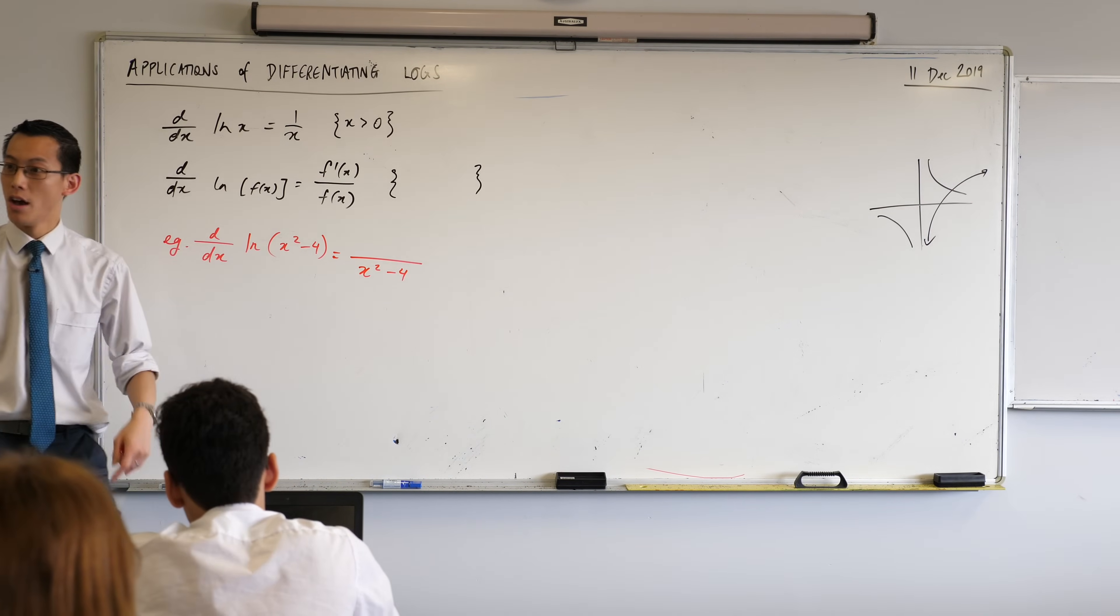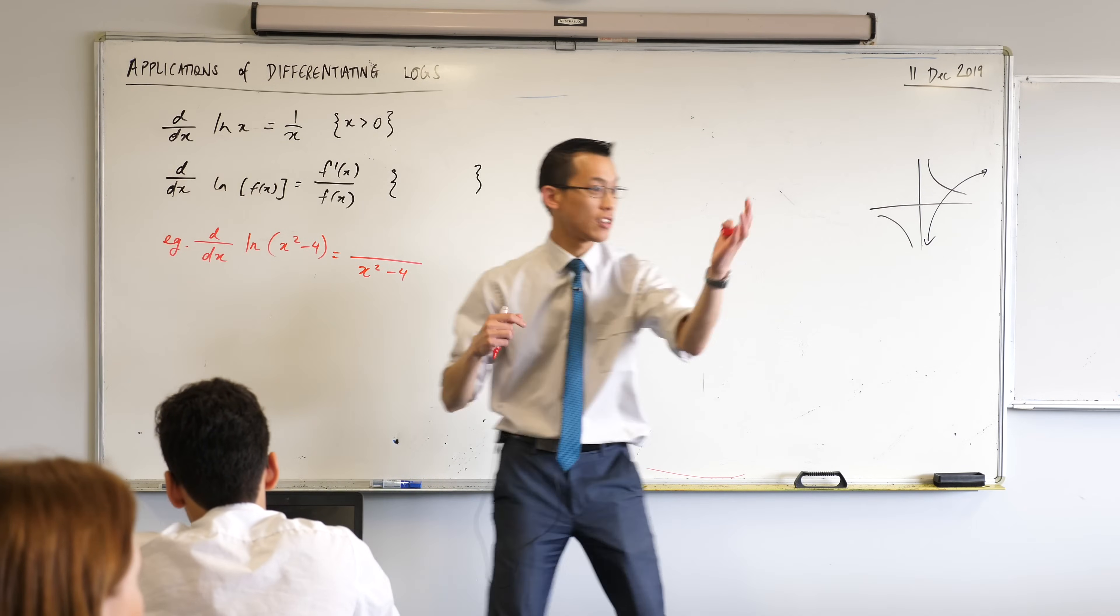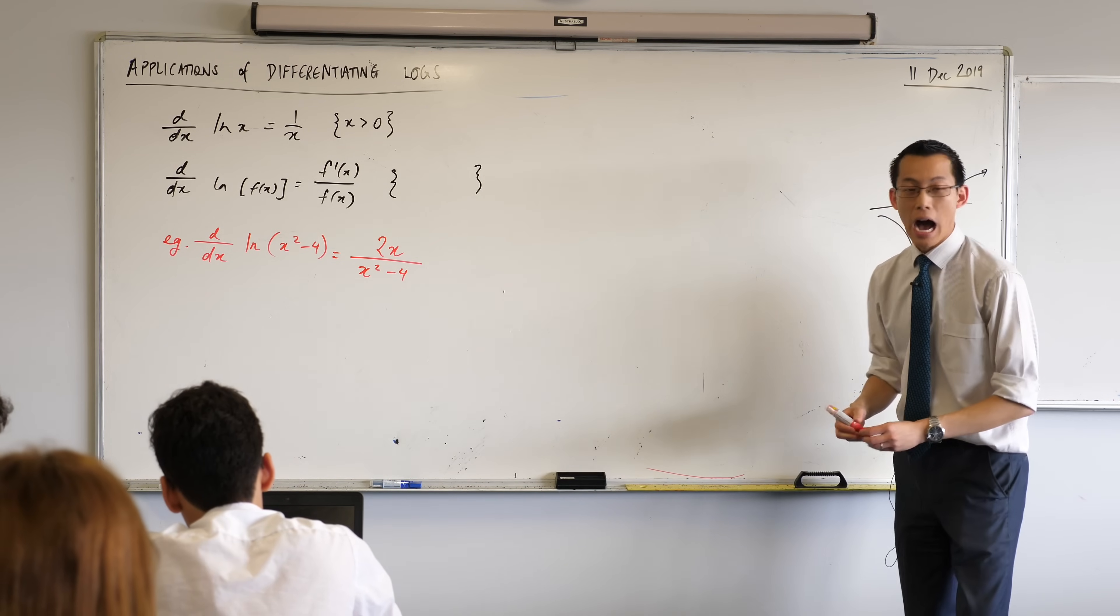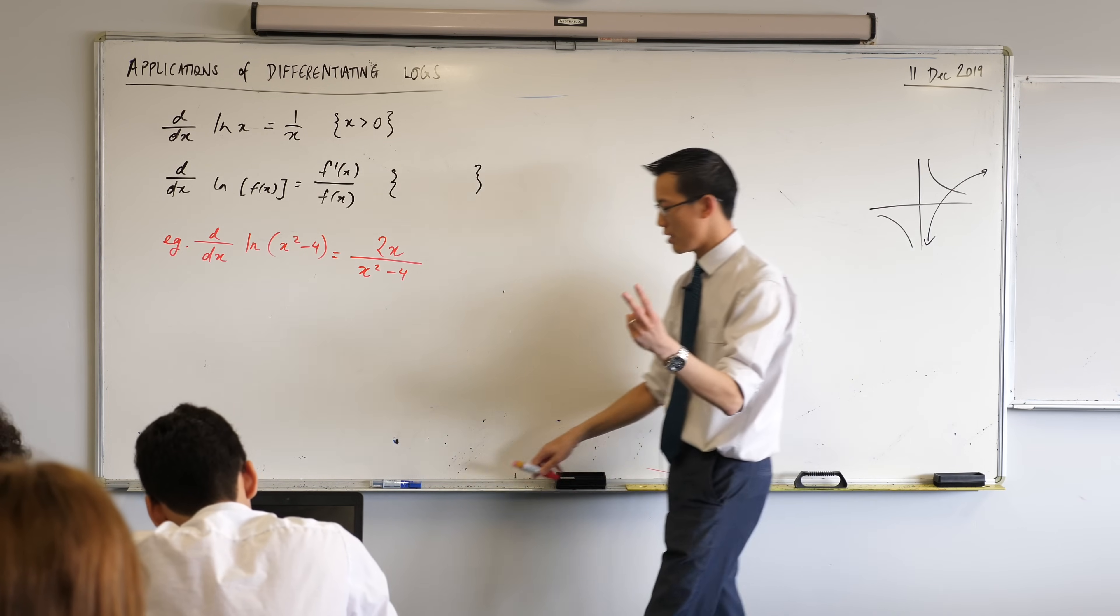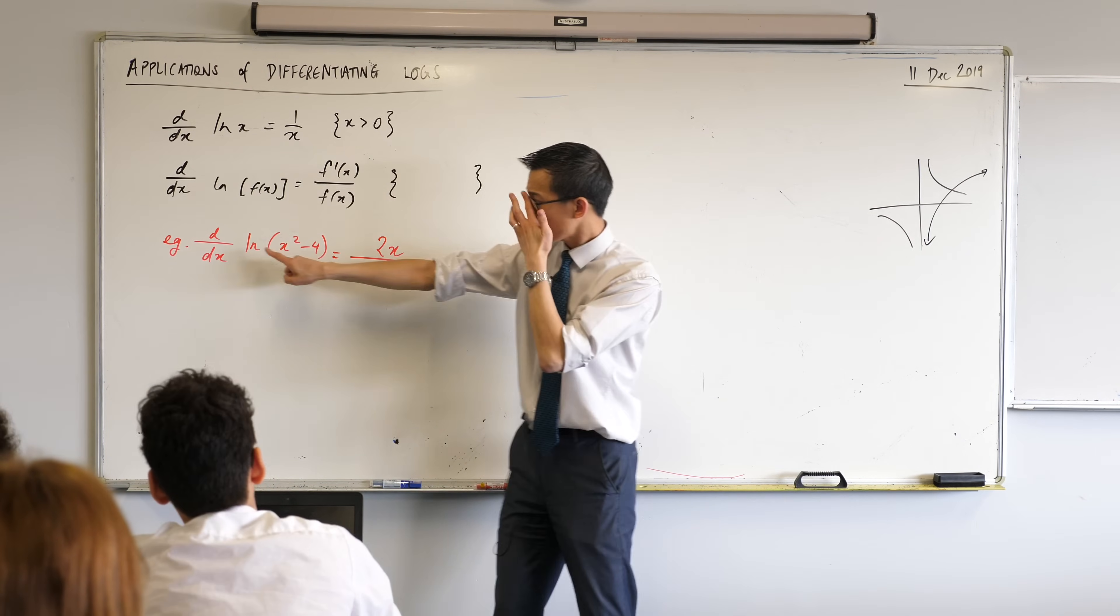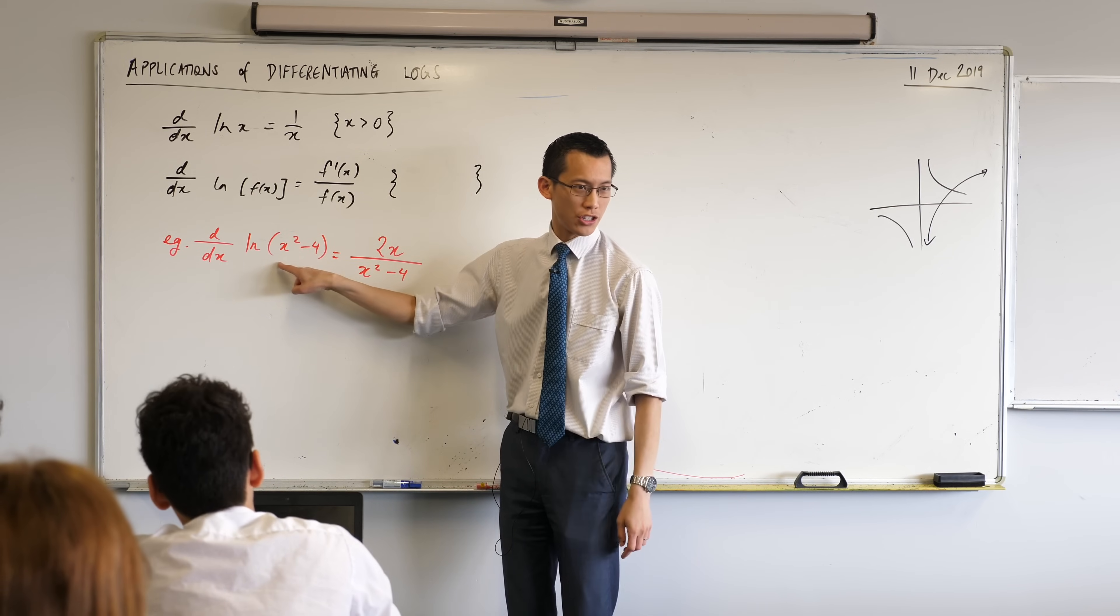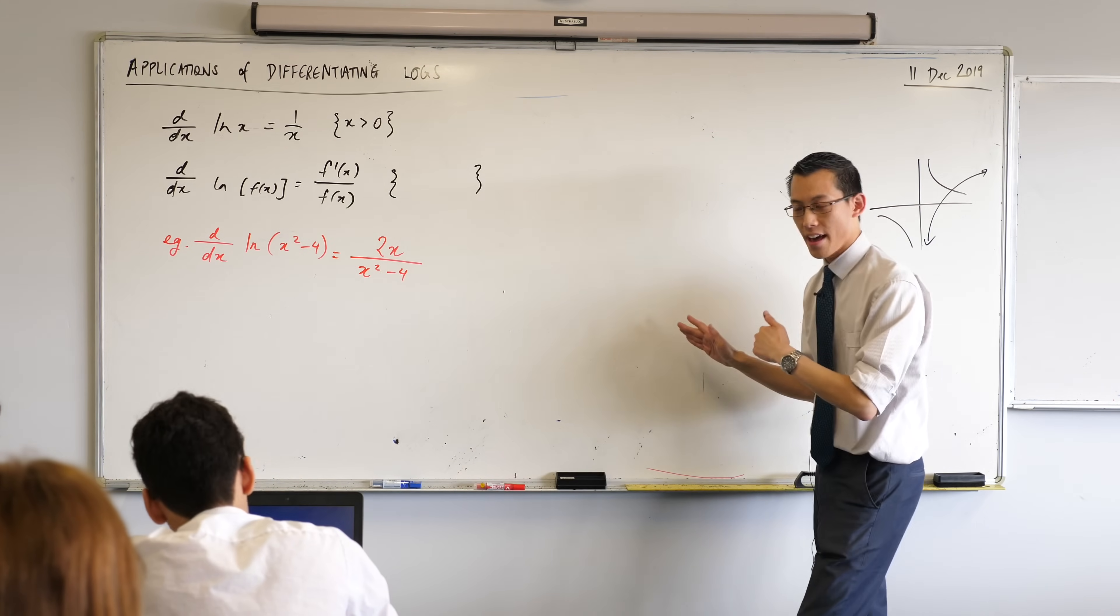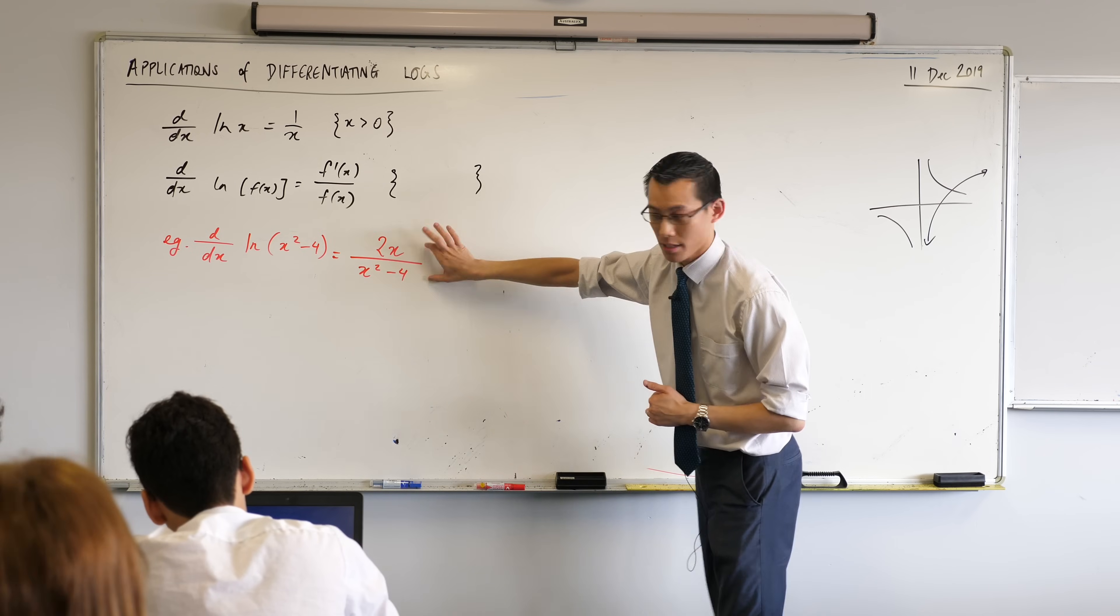No changes required. On the top, in this case, F dash is just 2x. Excellent. Fantastic. Now, go ahead. In Desmos, I want you to give me two graphs. And you can put them on top of each other. Go ahead and graph this original function. Log of x squared minus 4. And then I also want you to graph this guy. Can you do that for me?